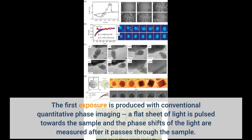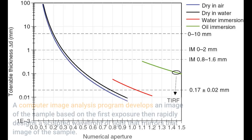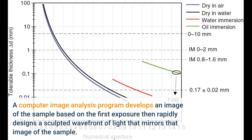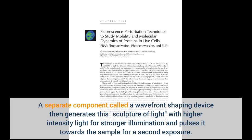The first exposure is produced with conventional quantitative phase imaging. A flat sheet of light is pulsed towards the sample and the phase shifts of the light are measured after it passes through the sample. A computer image analysis program develops an image of the sample based on the first exposure, then rapidly designs a sculpted wavefront of light that mirrors that image of the sample. A separate component called a wavefront shaping device then generates this sculpture of light with higher intensity for stronger illumination and pulses it towards the sample for a second exposure.